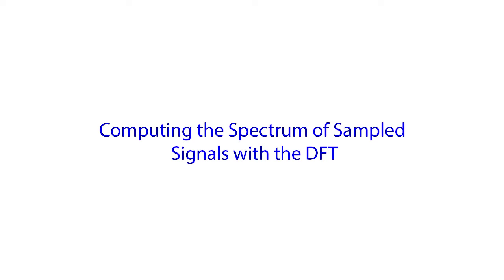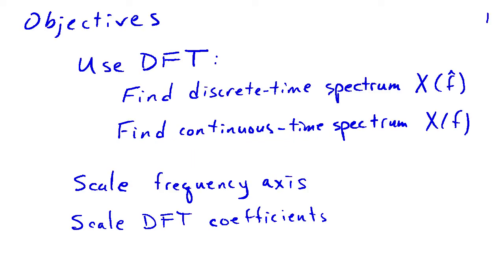One of the many uses for the discrete Fourier transform is to compute the spectrum of signals that have been sampled. We're going to learn how to use the DFT to find the spectrum of discrete time signals, denoted as x of f-hat, and also to find the spectrum of continuous time signals x of f. This involves scaling the frequency axis as well as scaling the DFT coefficients.